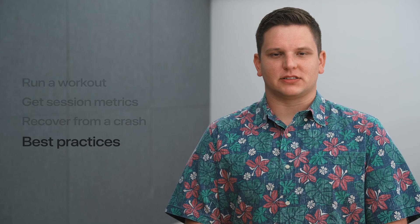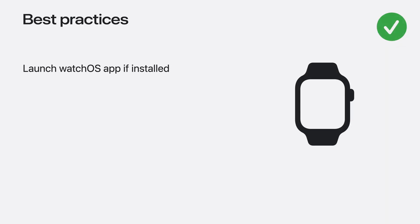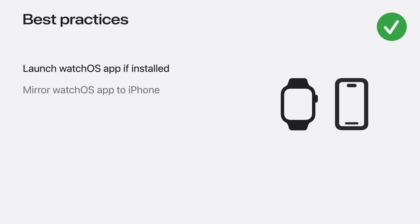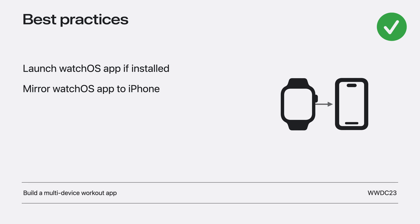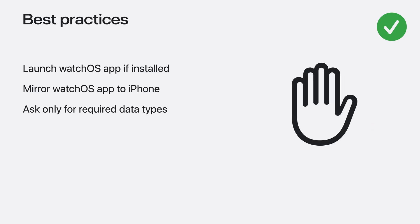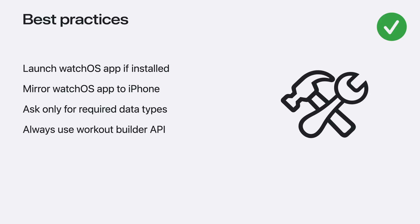Finally, let me go over some best practices for workouts. If you have a watch app, be sure to start the workout there to get all available metrics — just call Start Watch App from the health store — and once you have, be sure to mirror the workout to the iPhone. Check out 'Build a Multi-Device Workout App' from WWDC23 to learn how. Your app should only request authorization for data types you need; you don't want your users wondering why you're asking for authorization for data types that seem unrelated to the focus of your app. And finally, always use the Workout Builder API to create and save a workout — this will ensure that activity rings are appropriately updated. That's how to track workouts with HealthKit on iPhone and iPad. With this update, these devices now have a robust API with crash recovery and the ability to display and manage workouts even when the screen is locked.